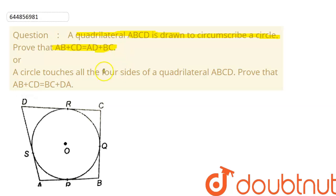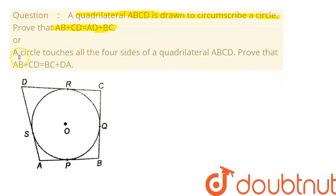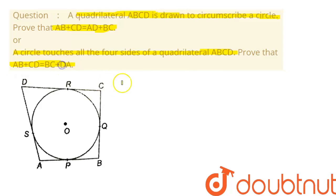This question can alternatively be asked as: a circle touches all four sides of the quadrilateral ABCD, and we need to prove that AB plus CD equals BC plus DA. Both forms of the question imply the same thing, and now we are going to solve it.